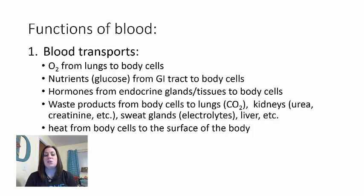Blood also helps with heat. When body cells do metabolic processes, exothermic reactions give off heat. The blood carries this heat and delivers it to the skin so it can be released when you're hot. That's why when you get really warm, you'll get flushed—more blood is shunted toward the skin to help radiate that heat off.